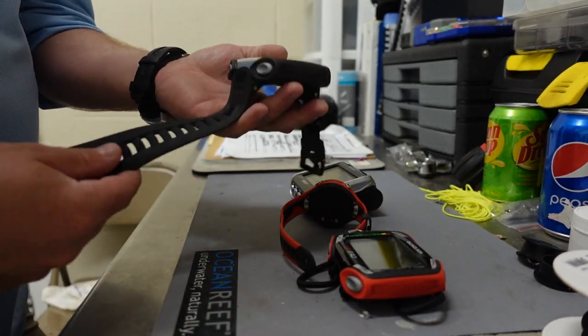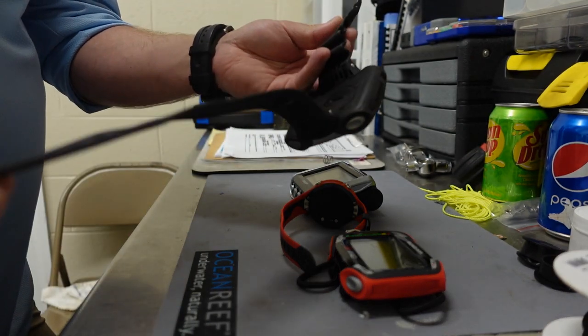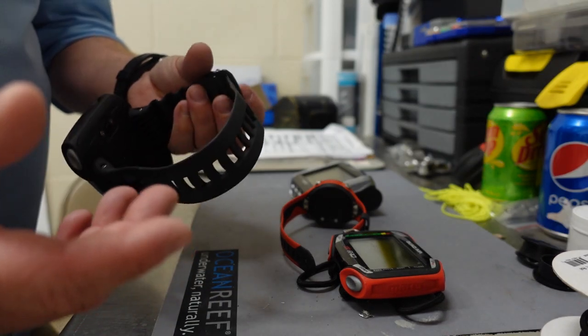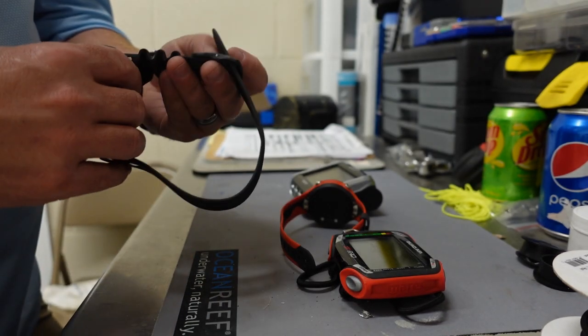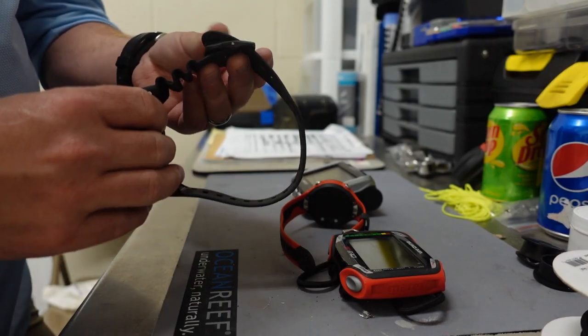And the same would actually apply with a strap system like this. This is a standard Quad Air, and you'll see it's got an extremely long strap system, which makes it very nice if I'm diving in a thick wetsuit or even a dry suit, because I've got this big, long cuff that can go around and tighten down.